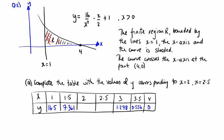Complete the table with the values of y corresponding to x equals 2 and x equals 2.5. So we put 2 in for x, we're going to get 16 over 4 minus 2 over 2 plus 1, which is 4.